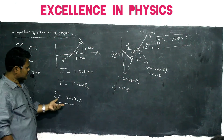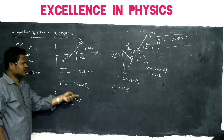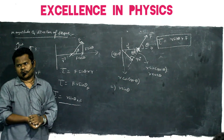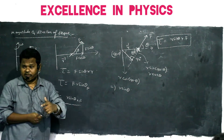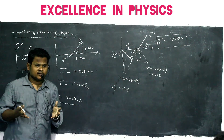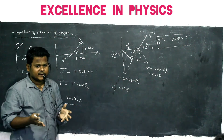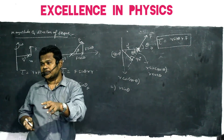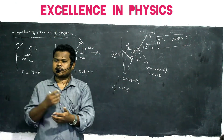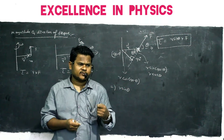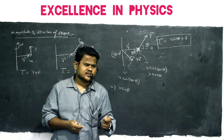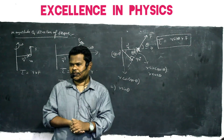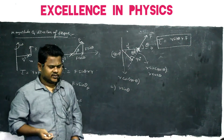Either you can split the force into two components, or you can split the radius vector into two components. Whatever method you use, we are always taking those two components which are perpendicular to each other, because only the perpendicular force can produce rotation in a body.